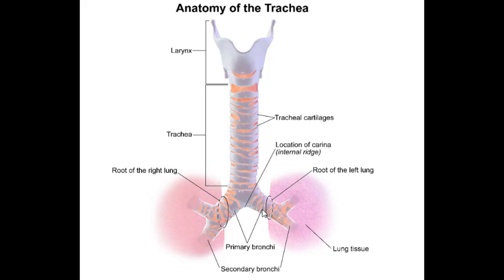The location where the trachea splits into two is called the carina, and this is at the level of T4, or the sternal angle of Louis. Another important point is that the trachea is anterior to your esophagus — meaning your esophagus sits behind your trachea.